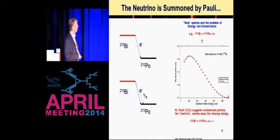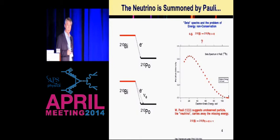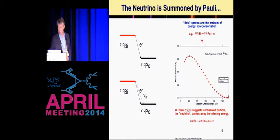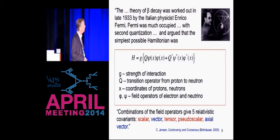When Pauli wrote his famous 'Dear Radioactive Ladies and Gentlemen' letter, he was really speaking to Meitner. There were not that many ladies in the business in those days. Within about three years, Fermi — in fact probably two — Fermi had worked out the theory of beta decay, making use of Pauli's suggestion of a neutrino.